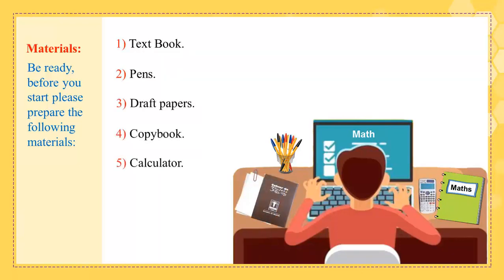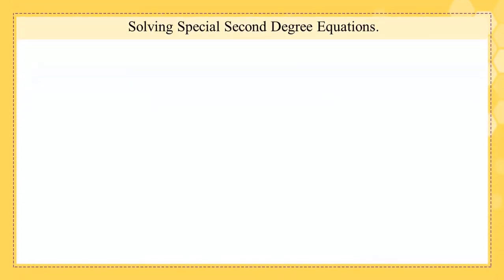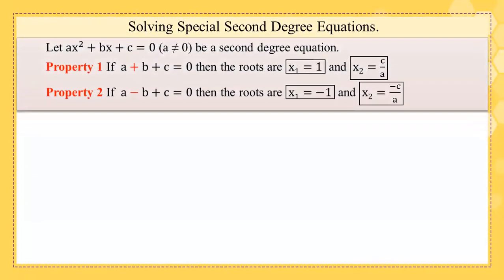Let us start. First we are going to talk about how to solve special second degree equations. If we have a second degree equation ax² + bx + c = 0, where a is non-zero, we have this property one: if you notice that a + b + c = 0, you can find the roots directly without finding the discriminant delta. You can say directly: x₁ = 1 and x₂ = c/a.